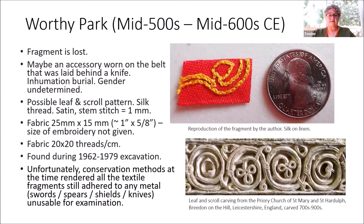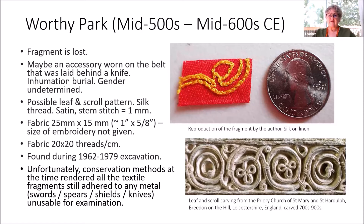The size of the fabric was about one inch by five-eighths inch, but the size of the embroidery was not given. I'm guessing that if they described the embroidery as a possible leaf and scroll, there had been some kind of scrolling vine with a leaf. This was found during the 1962–79 excavation, but unfortunately conservation methods at the time rendered all textile fragments that adhered to metal unusable. I've included a photo from the Priory of St. Mary and St. Hartle in England showing a vine and leaf scroll pattern — showing how embroidery echoes architectural design.